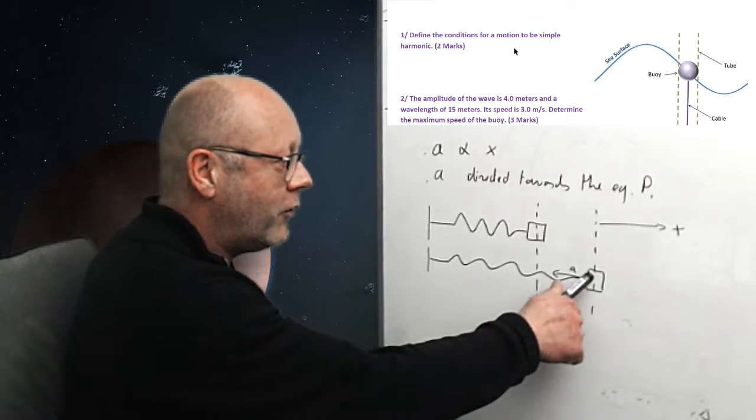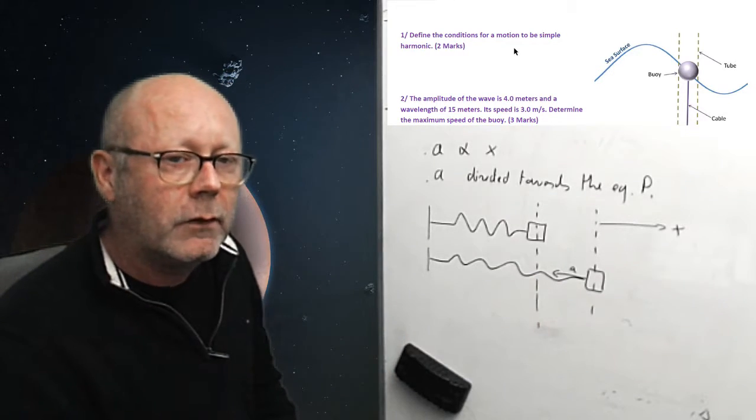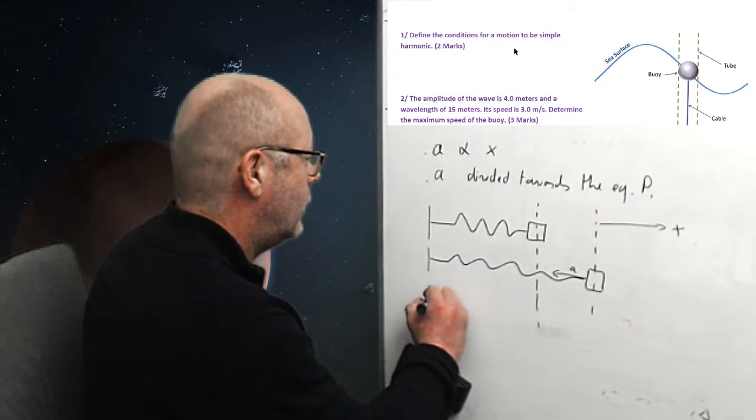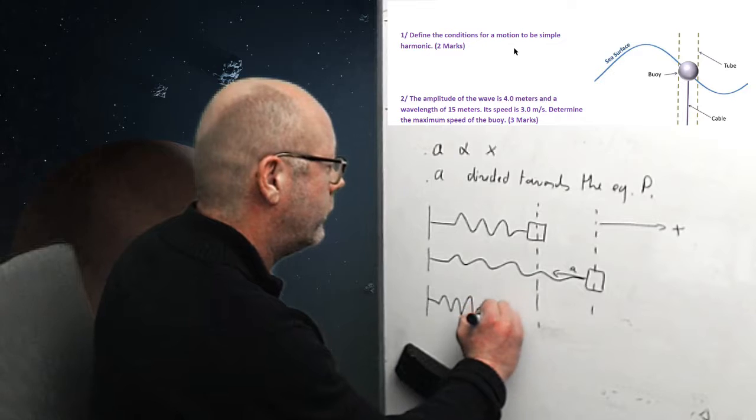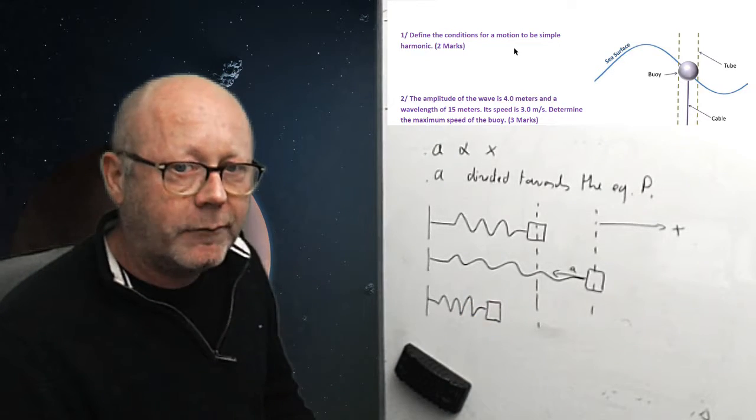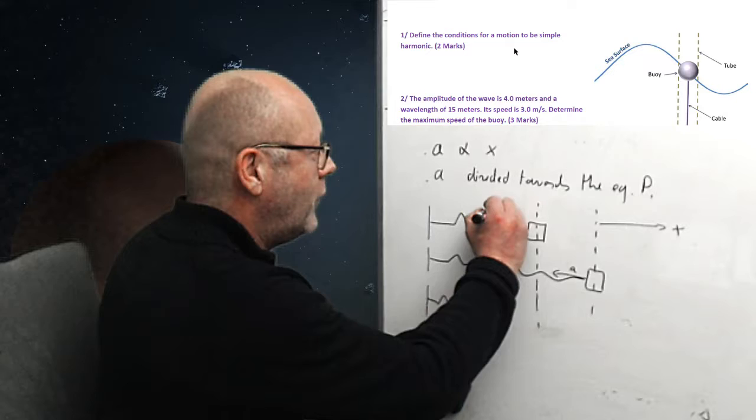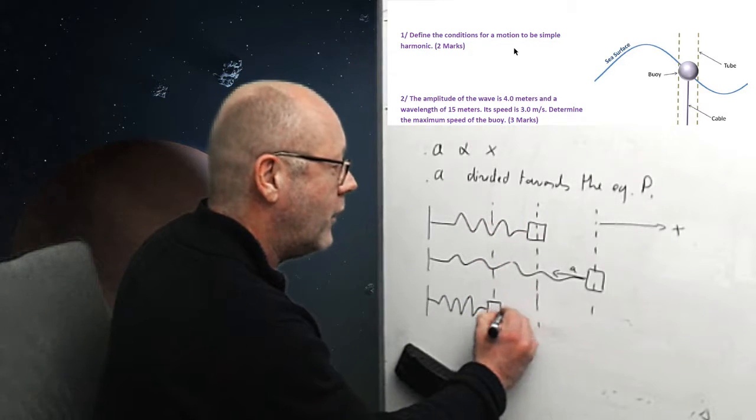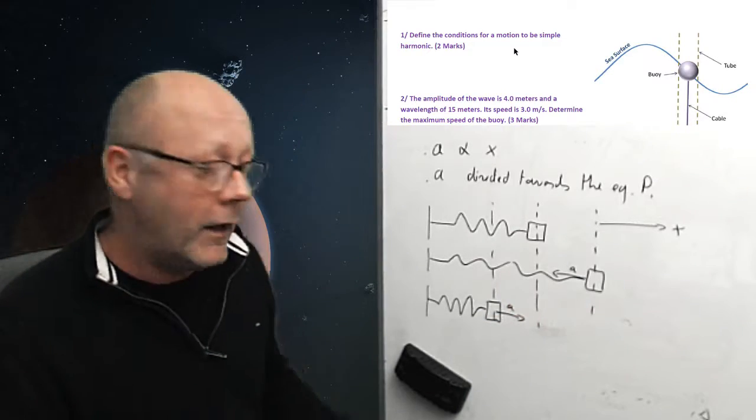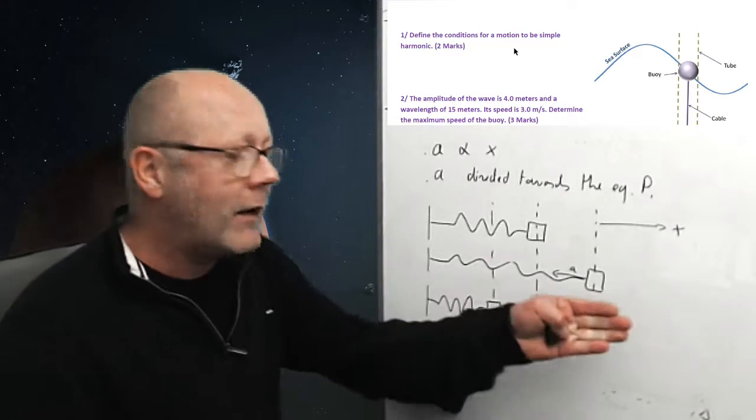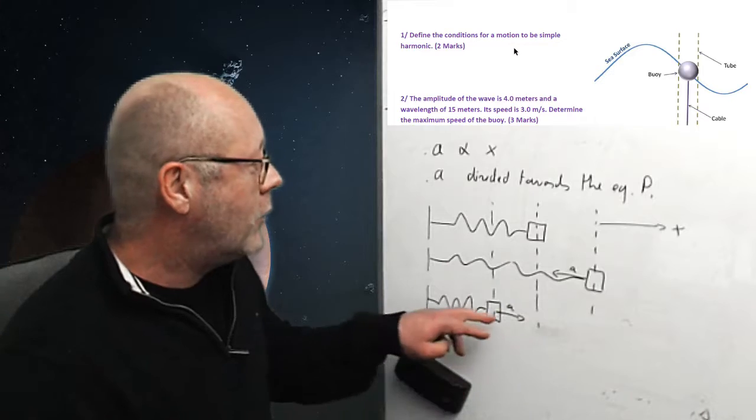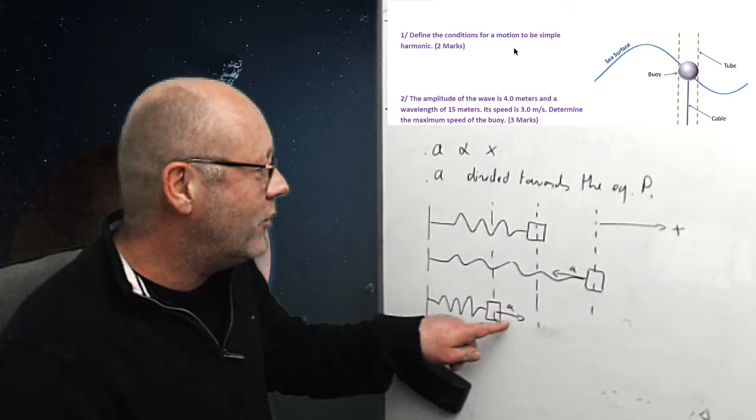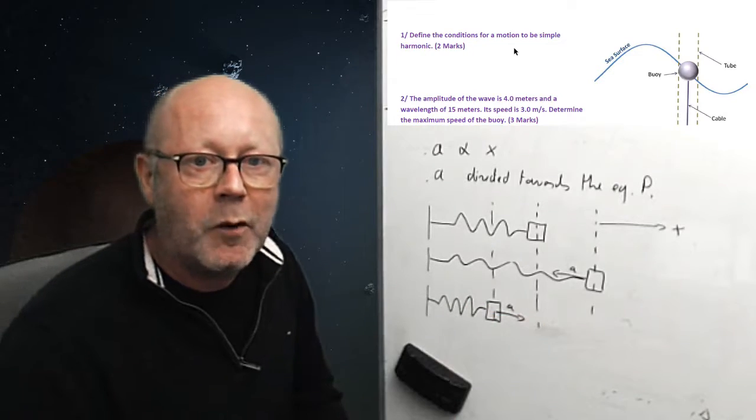And the acceleration, you see, is directed towards the equilibrium position. Let's check what happens if I compress the spring. I push on the spring. And then I release it. Now, you see, the displacement now is on the negative side. While the acceleration is this way. Yeah, the spring starts accelerating that way. So, the acceleration is positive and the displacement is negative. You see, opposite signs. And the acceleration is always directed towards the equilibrium position.